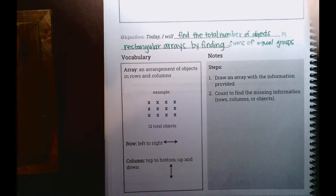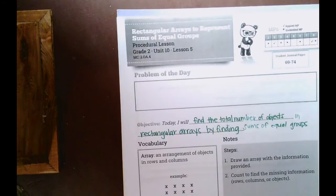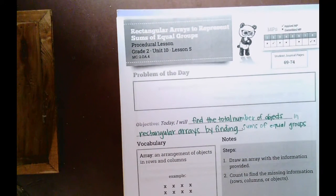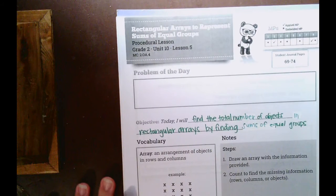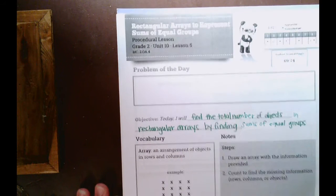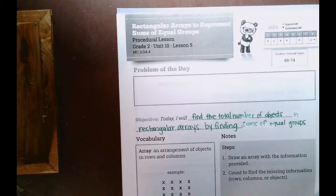Alright, so today for our math lesson unit 10, lesson 5, rectangular arrays to represent sums of equal groups. This is like the second part to the lesson that we did yesterday, but we're not going to be talking about manipulatives anymore. We're going to get into learning how to draw and set up our own arrays given the information that we're given.